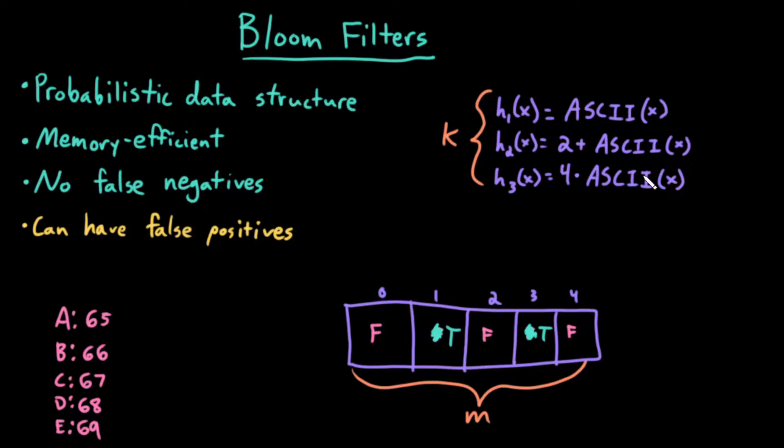Then my third hash function is 4 times the ASCII value, so 4 times 66. 66 times 4 is 264. So 4 times 66 mod 5 would be 4, so index 4 also gets set to true.